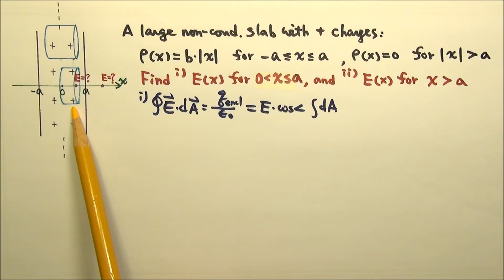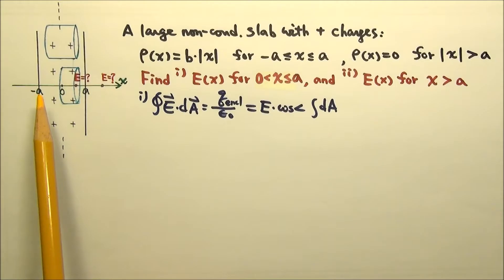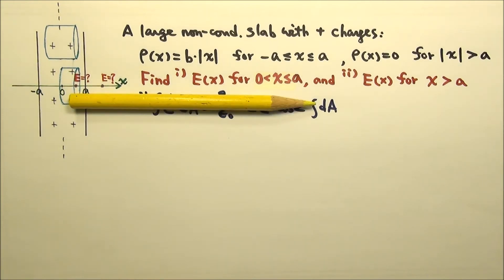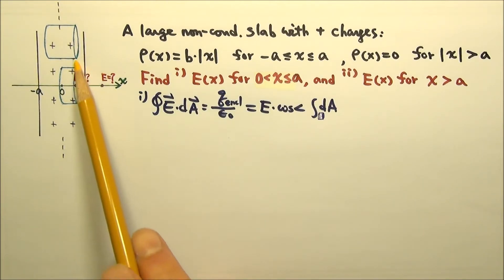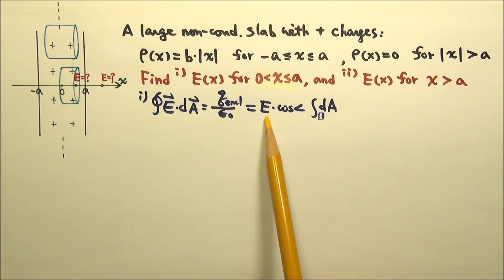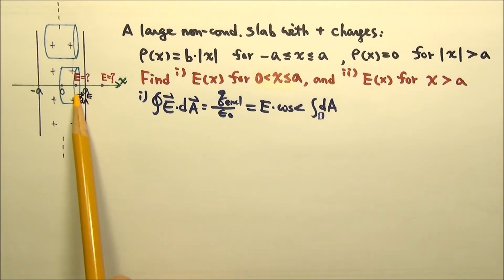Which part of this Gaussian surface has non-zero flux? By symmetry, there is no electric field at x equals zero, so there is no flux through the left end of the cylinder. There is no flux through the curved part of the cylinder either, because the electric field on the right side of the x equals zero plane, produced by these positive charges with planar symmetry, is in the positive x direction. So no field lines go through the curved part. Therefore, the only part with non-zero flux is the right end of the cylinder. By symmetry, everywhere on the right end, the electric field has the same magnitude, so E can be taken out of the integral. And everywhere on the right end, the electric field goes to the right, and the outward normal vector dA also goes to the right.